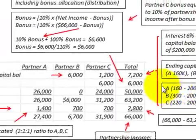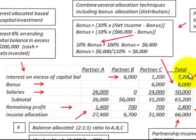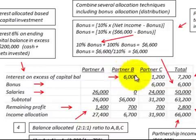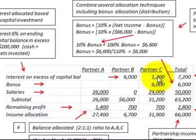Going up to our distribution for interest in excess of the capital balance: Partner A gets zero, Partner B gets $6,000, Partner C gets $1,200, for a total amount of $7,200.